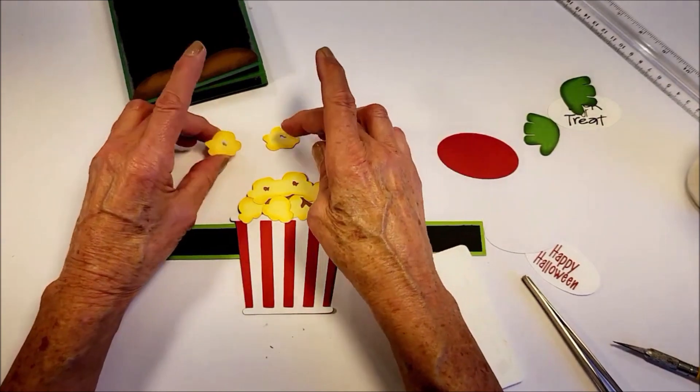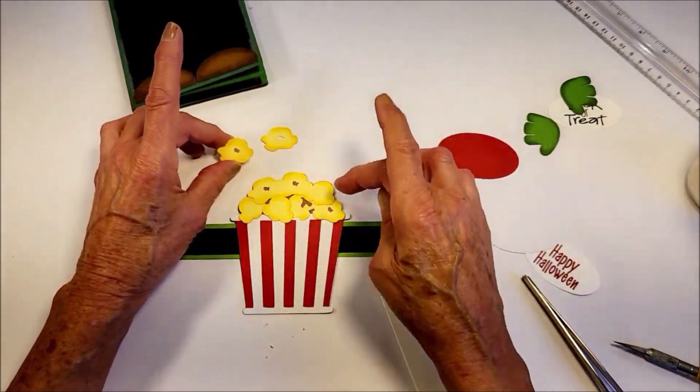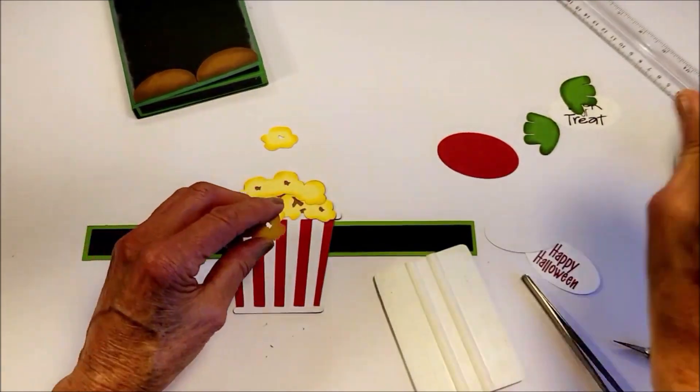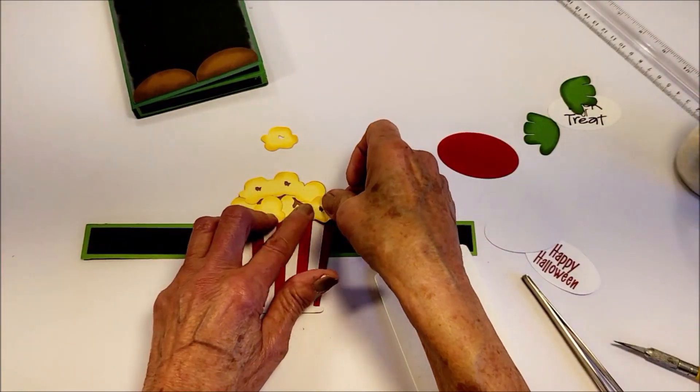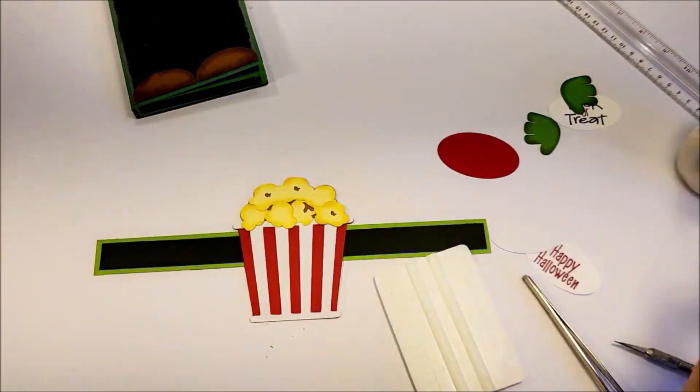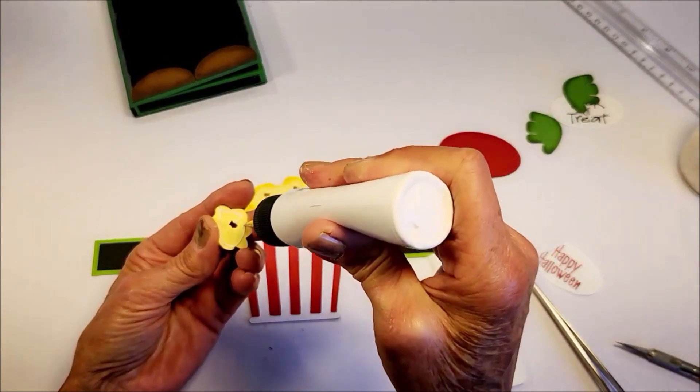And then these two are different sizes. There's a small one and a larger one. The small one goes down on this lower corner, and then the larger one is going to go in the top middle.